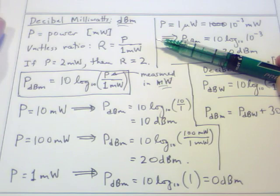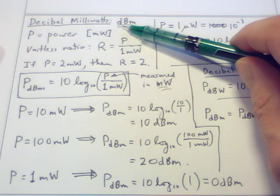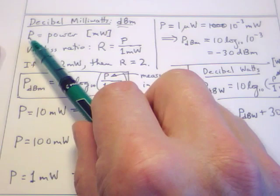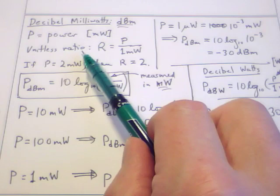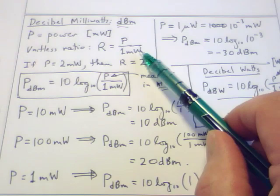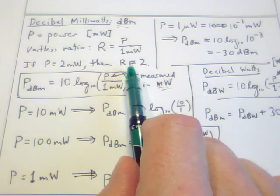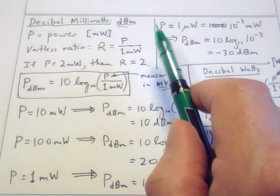In this video I want to talk about measuring power—this could be optical power or electrical power. We're going to look at the units of dBm, which are called decibel milliwatts. I'm going to start with a value of power P with units of milliwatts and form a unitless ratio from that by taking that power and dividing by one milliwatt. For example, if I have a power of two milliwatts, then my unitless ratio is two.